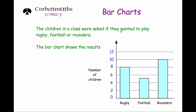The children in the class were asked if they wanted to play rugby, football or rounders, and the bar chart shows the results. We've got rugby, football and rounders, and going up vertically we've got the numbers 0, 2, 4, 6, 8, 10 and 12. That's important — whenever you're going up vertically, each of the numbers needs to go up by the same amount each time, and each time we're going up by two. We've got 'number of children' here — sometimes you might see the word 'frequency', which just means how many. You might see that on a bar chart, but quite often it'll be labelled 'number of children' or 'amount of pocket money' or whatever is going up vertically.